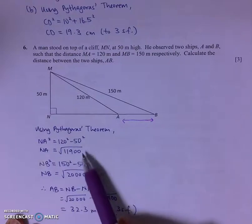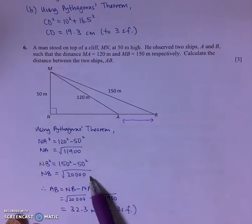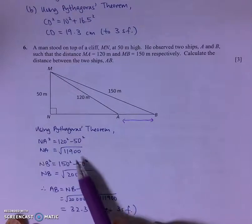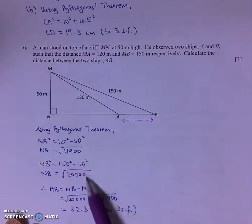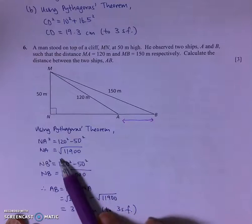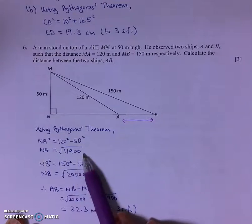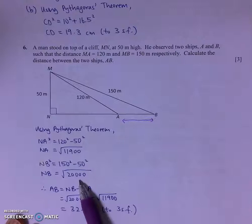So I use my Pythagoras theorem two times. I have chosen not to evaluate the values of the square root of 11900 and square root of 20,000, but instead use the exact value to do my subtraction.